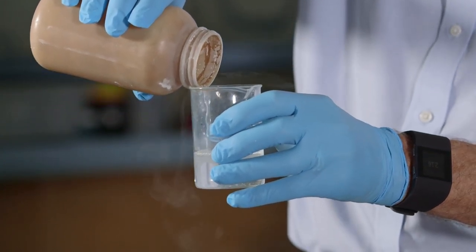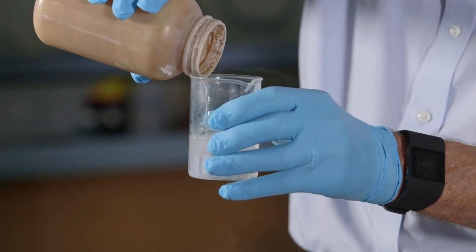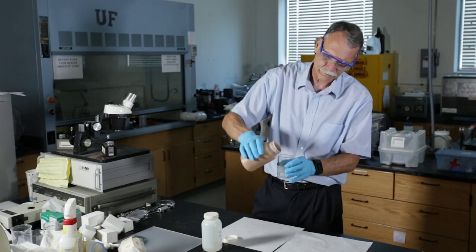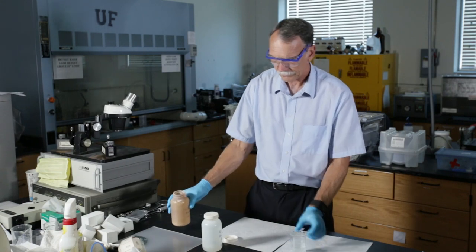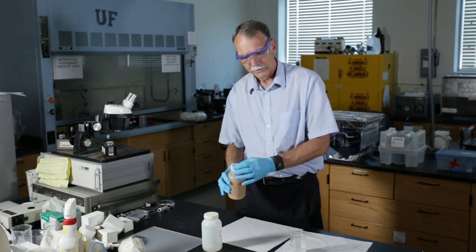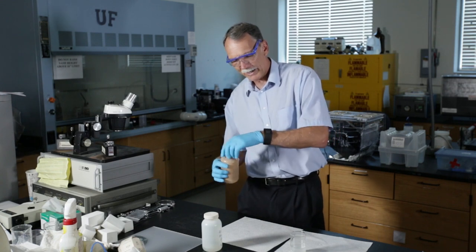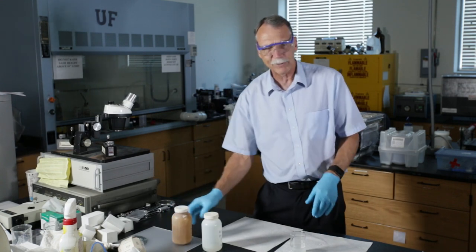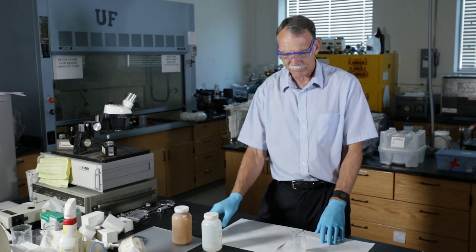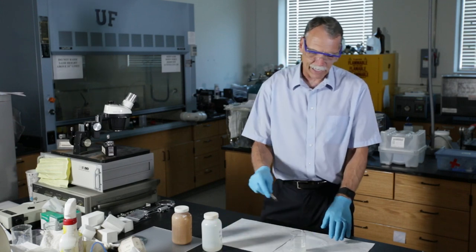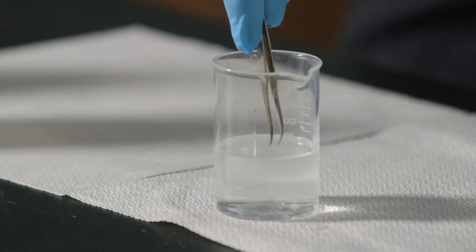What you're going to see is that now this material is sitting on top, and what happens is what we call an interfacial polymerization. Again, big word. What it means is that at the interface I am forming nylon.